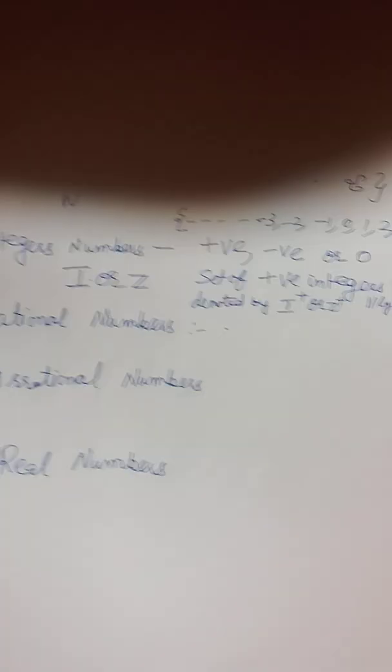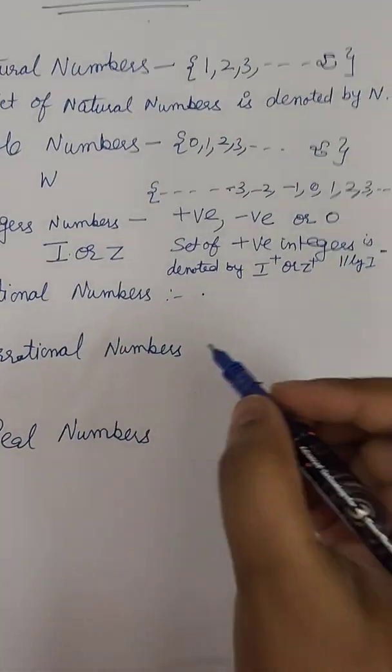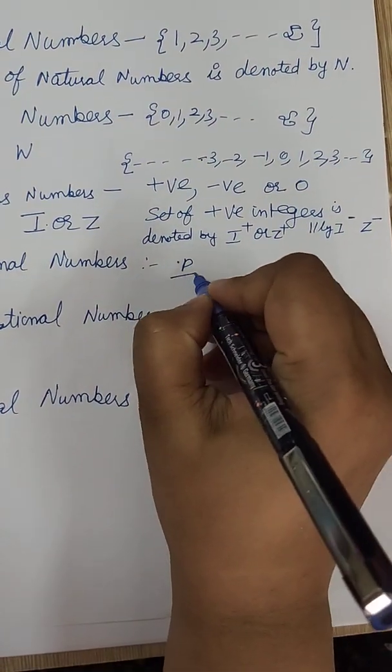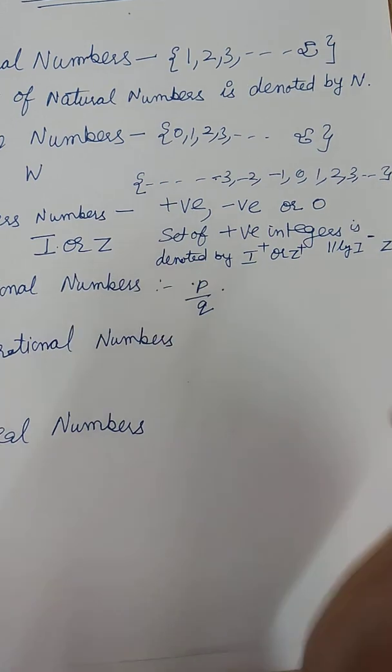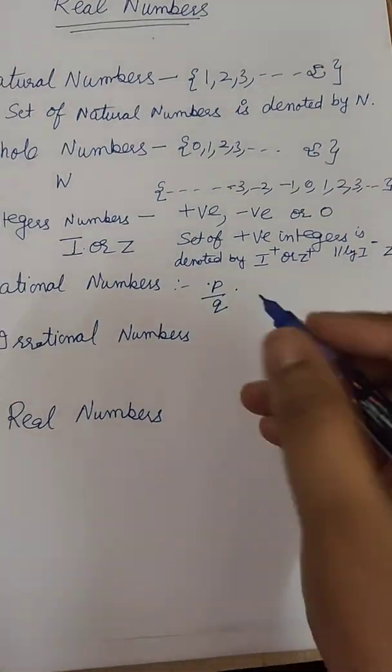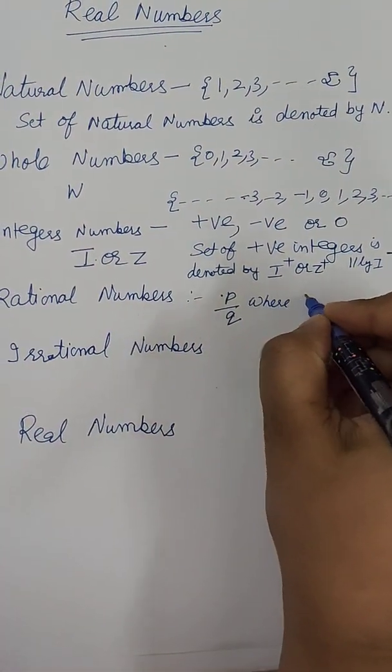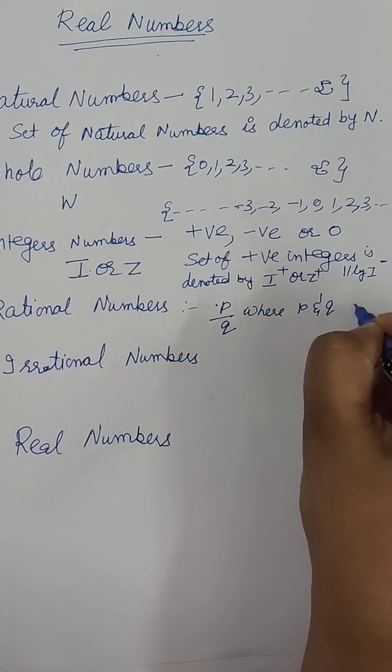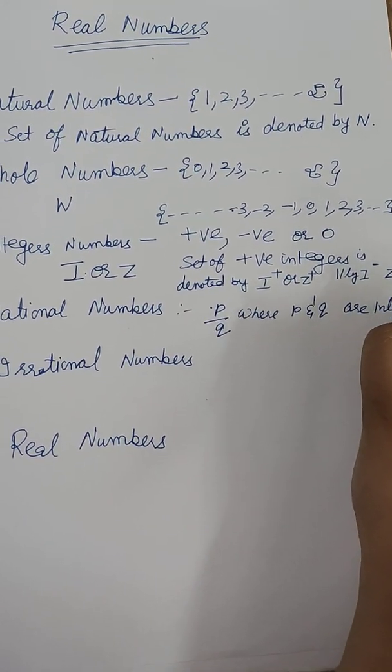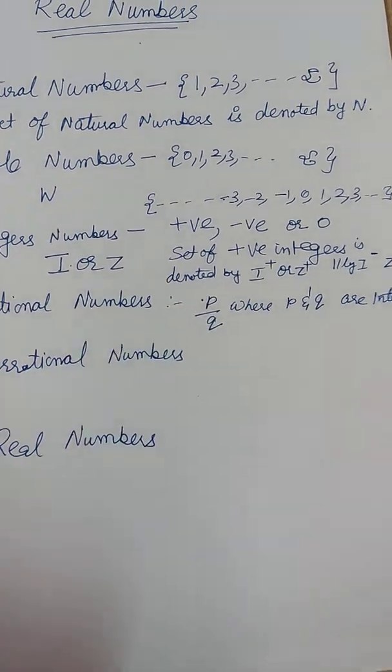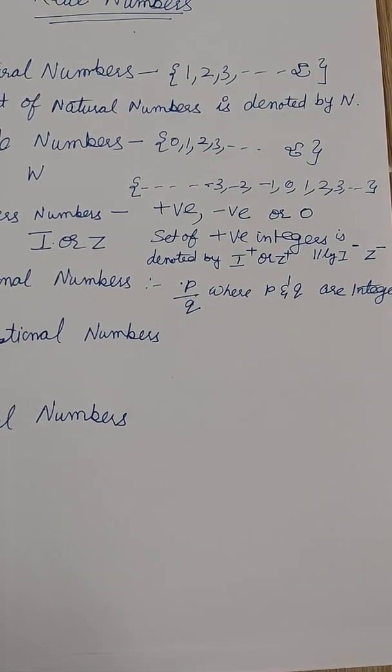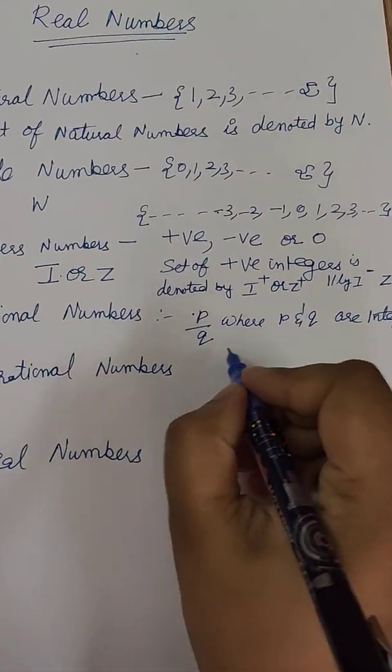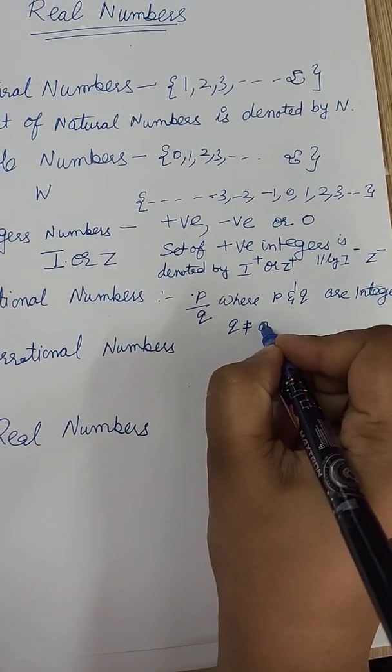But after then we did the rational numbers in 8th class as well as in 9th. But what are rational numbers? These numbers can be written in the form of P by Q. Now what condition is for P and Q? Where P and Q are integers. And the other condition we know that the denominator can never ever 0, so Q cannot be 0.